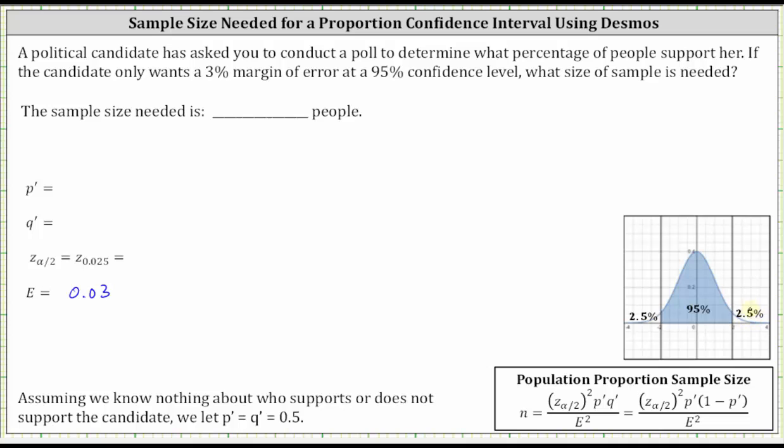To use Desmos to find the Z-score though, we need the area to the left, which is 0.975. Let's go to Desmos and find the Z-score.